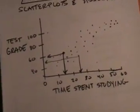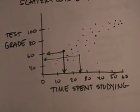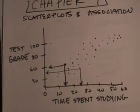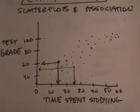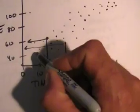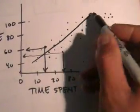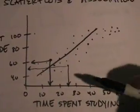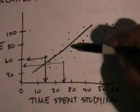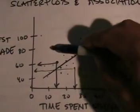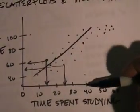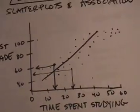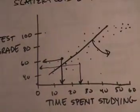Each of these points has a time spent studying and a test grade. Later on, we're going to look at this and say, look — the trend goes like this. That trend line is the model. We're going to use that model to say someone who studies 30 minutes most likely would have got an 80, someone who studies 40 minutes most likely had 100. And we're going to find an equation for this line.